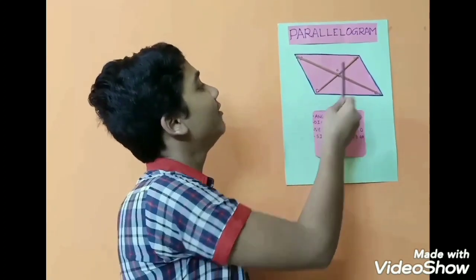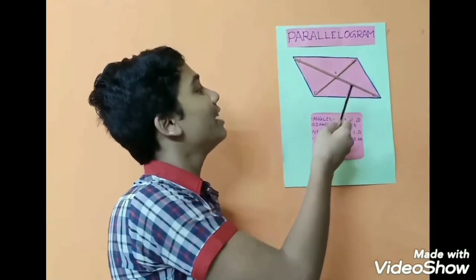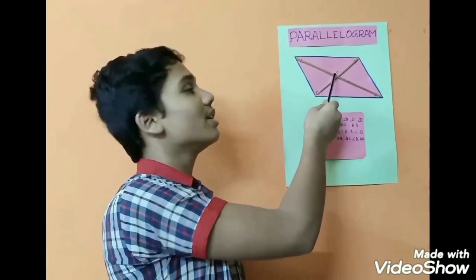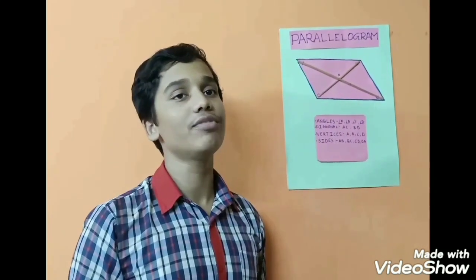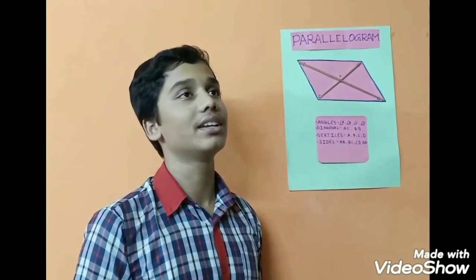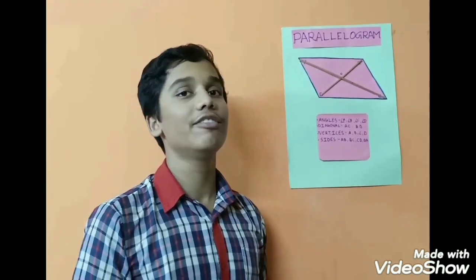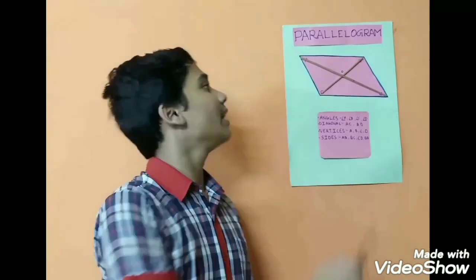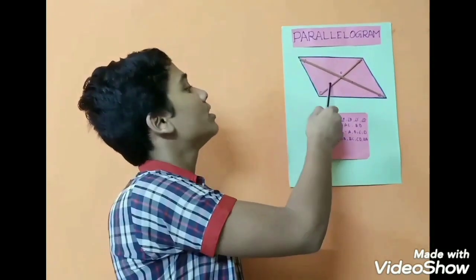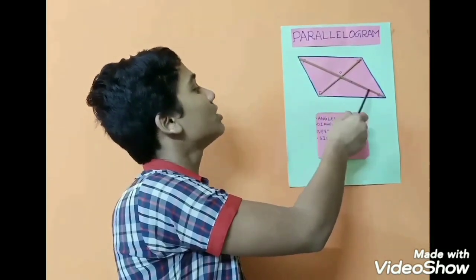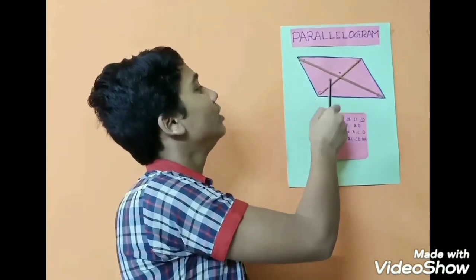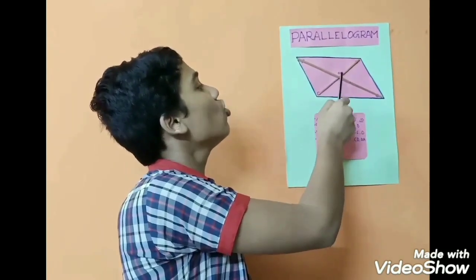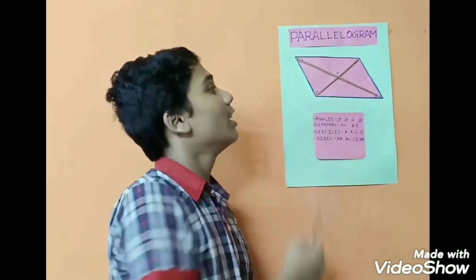The diagonals are AC and DB, and where they meet is known as O — the point of intersection. This point divides the diagonals into two equal parts, so AO is equal to OC and DO is equal to OB.